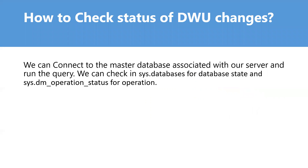How do we check the status of Data Warehouse Unit changes? We can connect to the master database associated with our server and run a query. We can check sys.databases for database state and sys.dm_operation_status for operation status. We can use SSMS, Synapse Studio, or the query editor in the Azure Portal to check the status of Data Warehouse Unit changes.